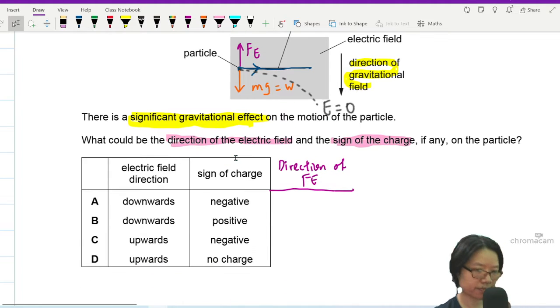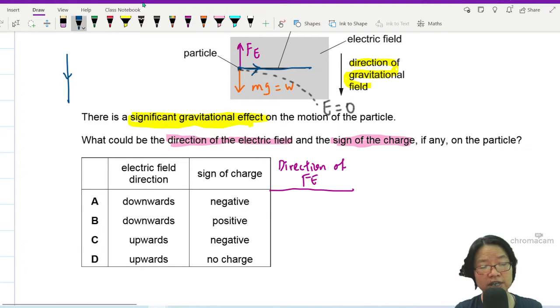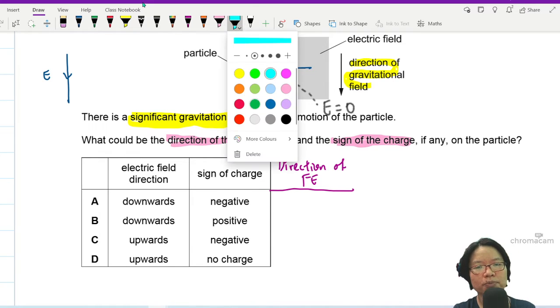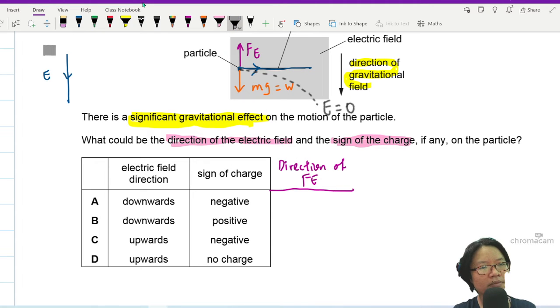First option, electric field is downwards, sign of the charge is negative. Okay, so just so you know, if this is the direction of the electric field downwards, you can think about your plates. Let's say I put two parallel plates here, one here and one here, two parallel plates. And if the direction of electric field is downwards, this is positive, this is negative. This is for people who need a bit of help in the memory department.